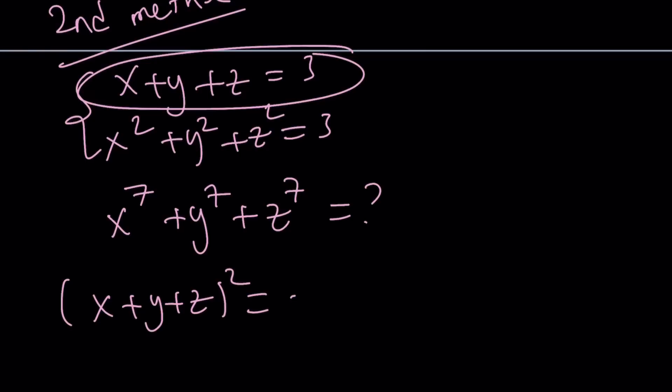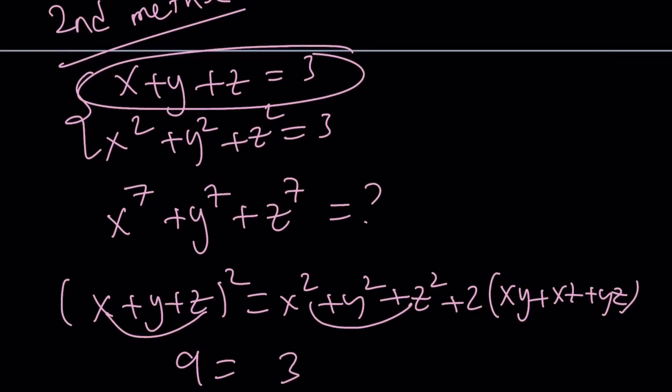So what do you do? Take this and square both sides, because that's needed. That gives you x squared plus y squared plus z squared plus 2 times xy plus xz plus yz. This is 3 squared, which is 9. This part is 3. This is 2 times something. Let's call it question mark. 9 minus 3 is 6, so this must be 3 as well. So xy plus xz plus yz is also 3.